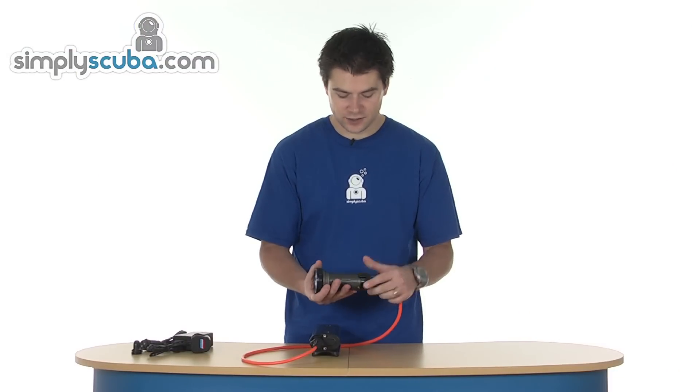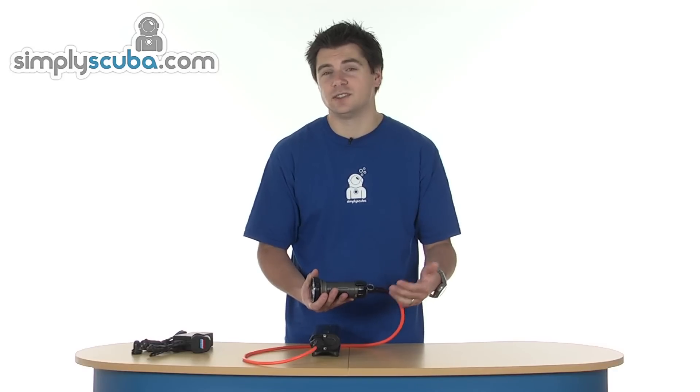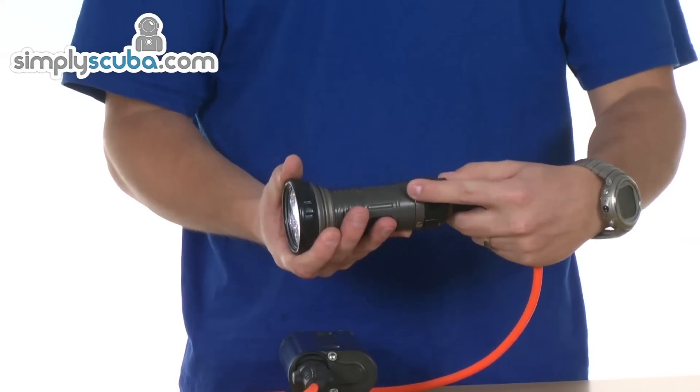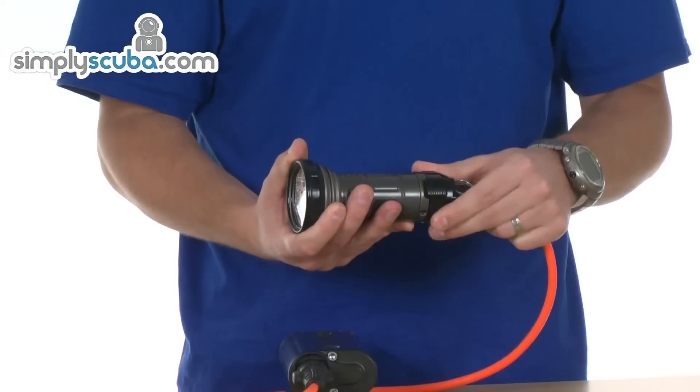If you turn it back, it's got a basic power setting, so you can move it down to a lower setting, so if you need to conserve power, you can do so. And then just turn it off, pull the lock back and turn it back into the off position.